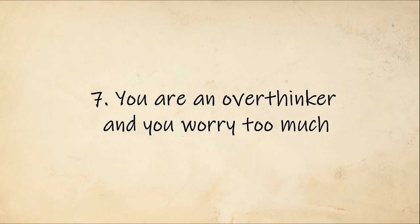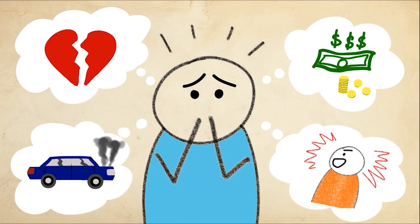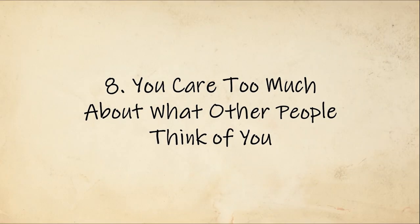Number seven: you are an overthinker and you worry too much, even about small things. You think of too many consequences and analyze things too much, and you focus too much on what could go wrong. Number eight: overthinking also leads you to care too much about what other people think of you.